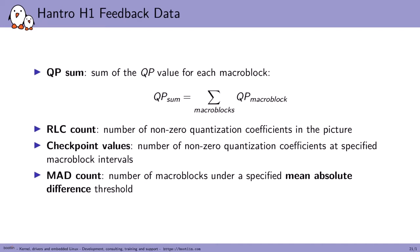The feedback data from the H1 includes the sum of QP for each macroblock (useful to calculate an average QP), the total number of non-zero quantization coefficients at the end of the process, the value at each checkpoint (useful to set future targets in the checkpoint method), and the number of macroblocks under the MAD threshold.